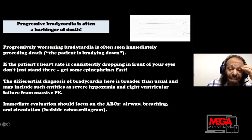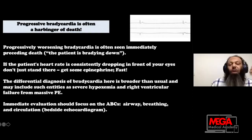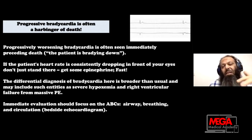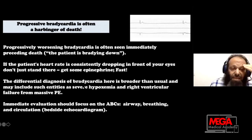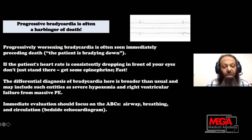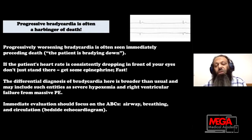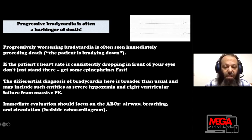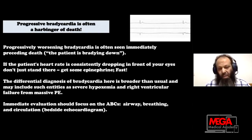The differential diagnosis of bradycardia in this setting should be broader than usual. If the patient is in MI or tamponade, you must investigate why the patient is having progressive bradycardia. This should include entities associated with severe hypoxemic respiratory failure, severe RV failure, or massive PE. Immediate evaluation should focus on the ABCs — airway, breathing, and circulation — using bedside echo as Dr. Waleed described in his presentation.